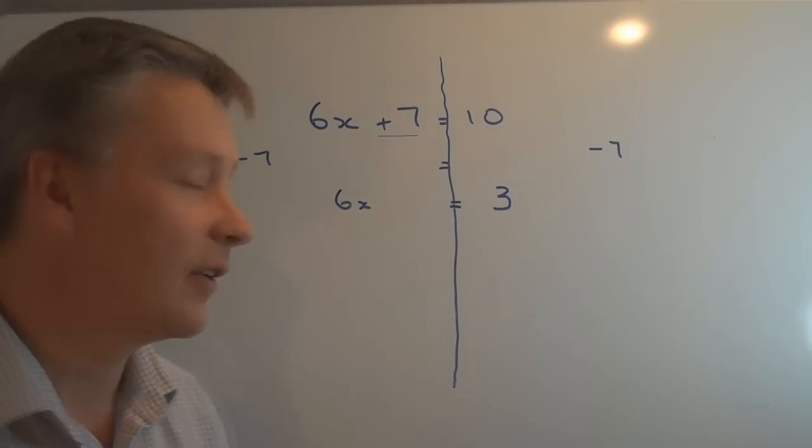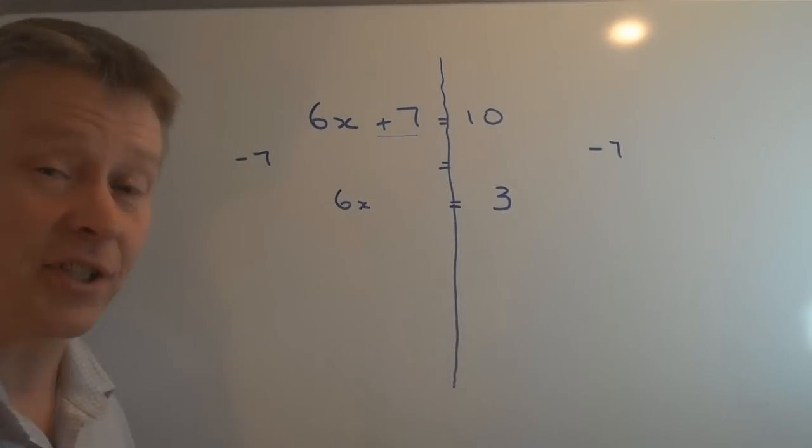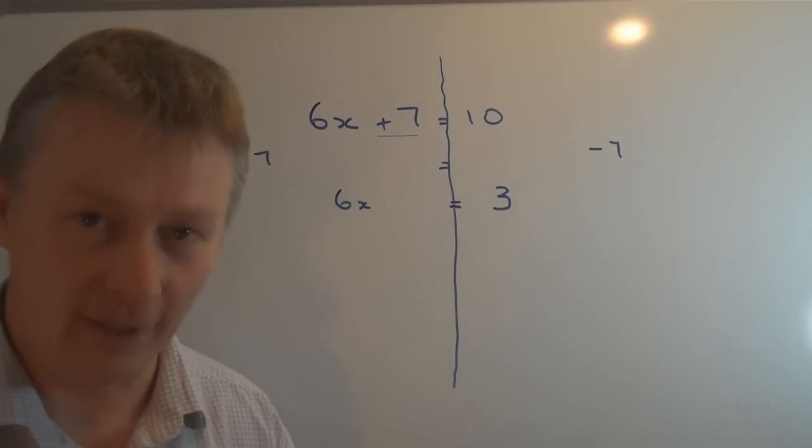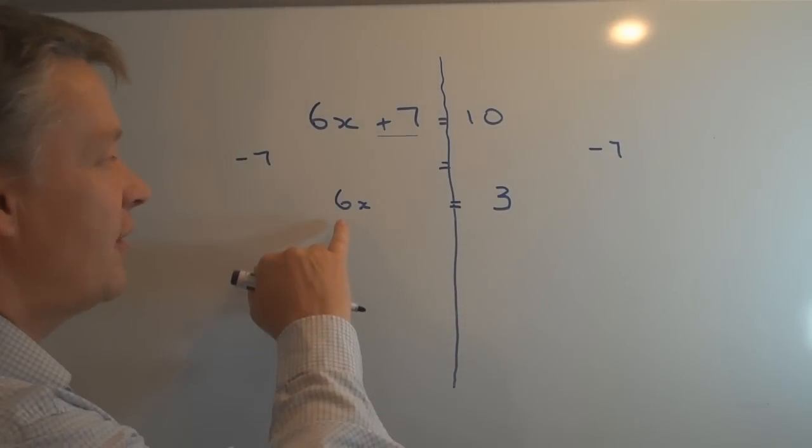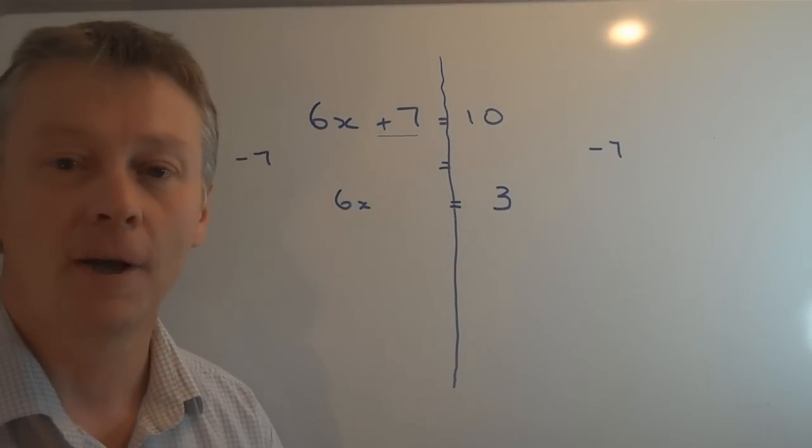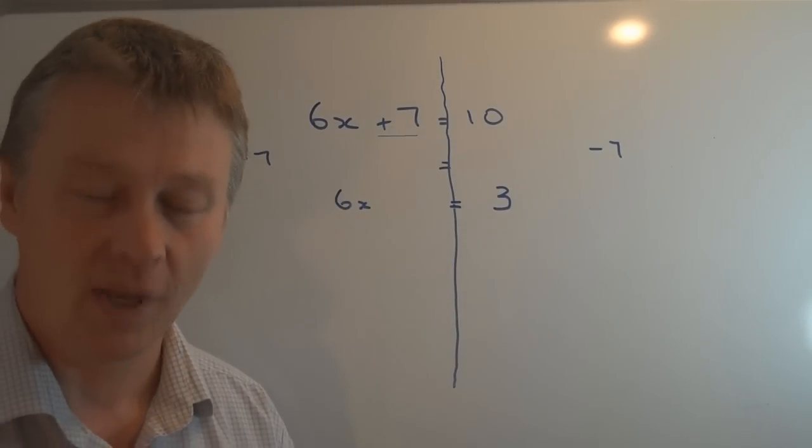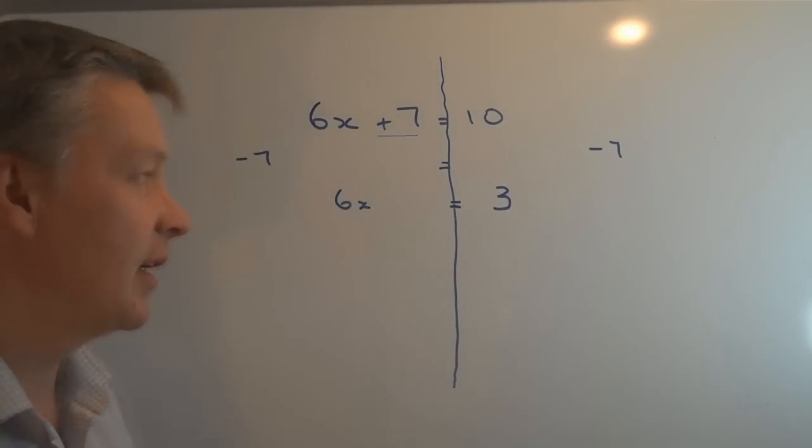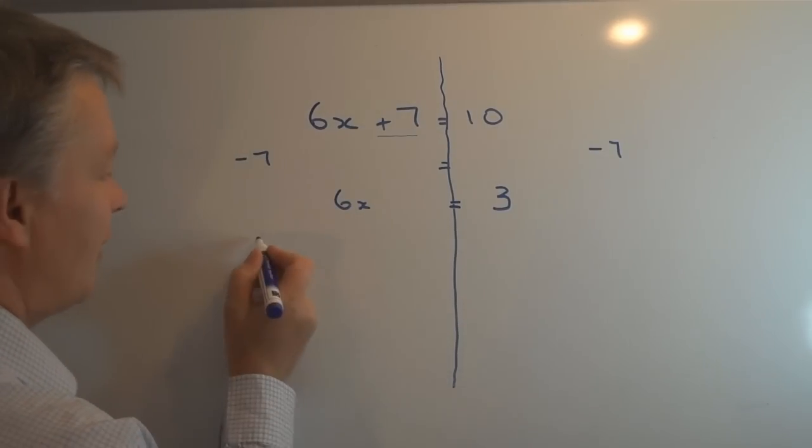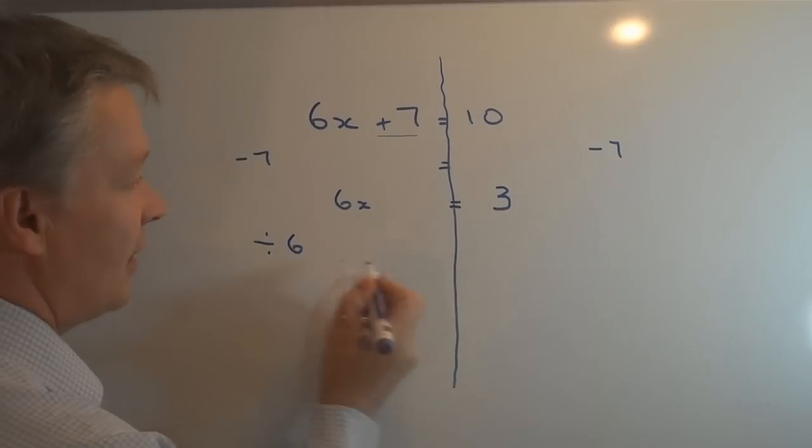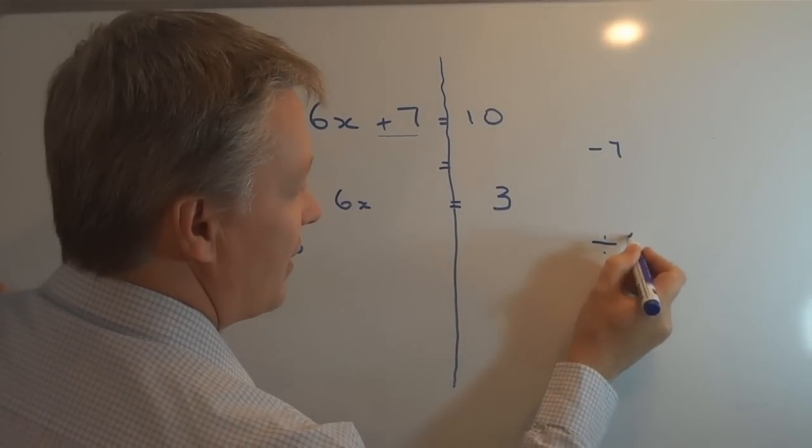I have to look at that 6x and I just want one value of x. So in order to do that, I'm going to divide both sides of the equation by 6, and that will give me one value of x. If I divide this side by 6 and divide this side by 6.